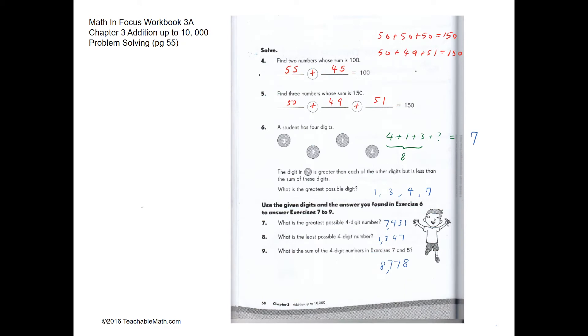These are some very helpful questions on number sense. Find two numbers where the sum is 100—there are obviously a lot of options, so we can have 55 and 45. Find three numbers where the sum is 150. First, we can have 50 and 50 and 50, that will make 150.